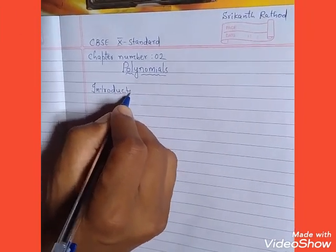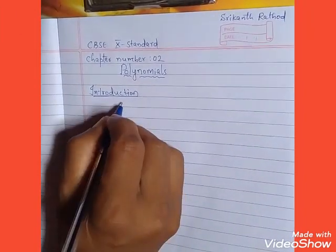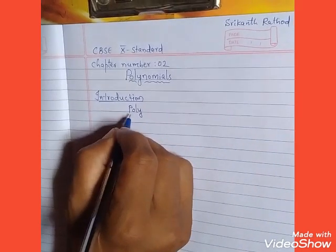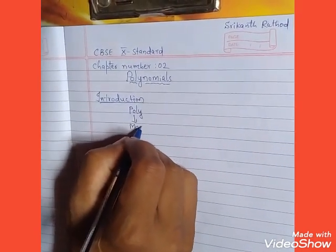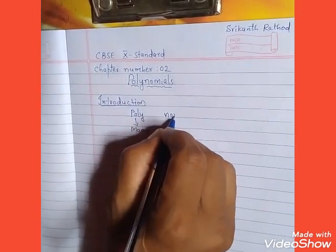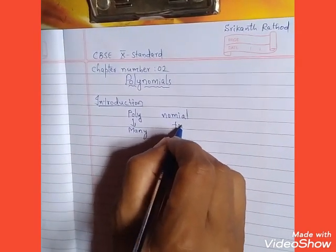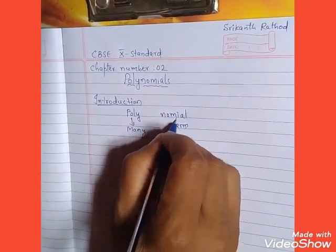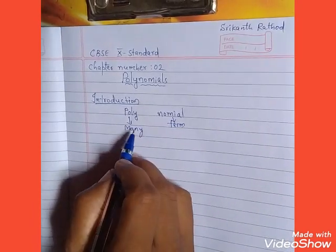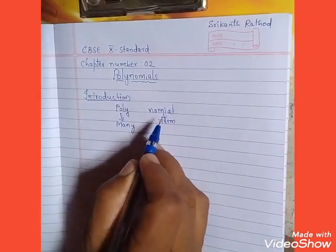What is the meaning of polynomial? As you learned in 9th standard, 'poly' means many, and 'nominal' means term. So many terms are involved in a polynomial.